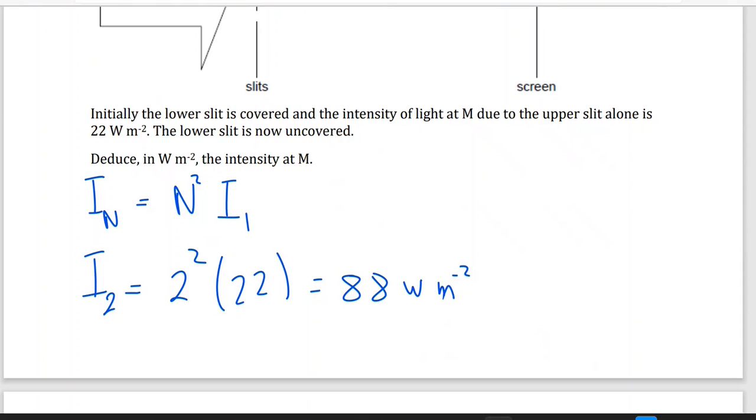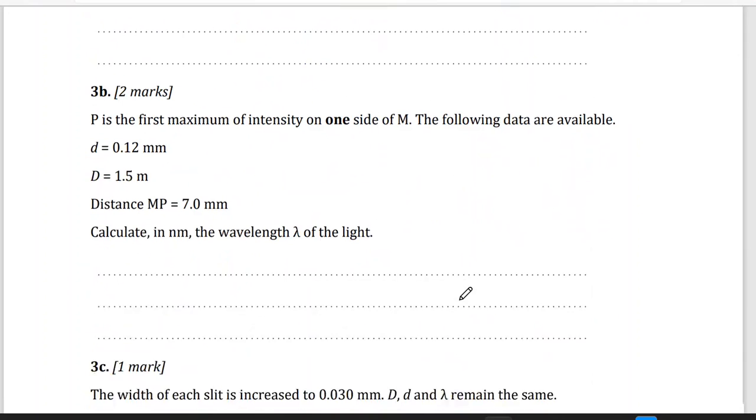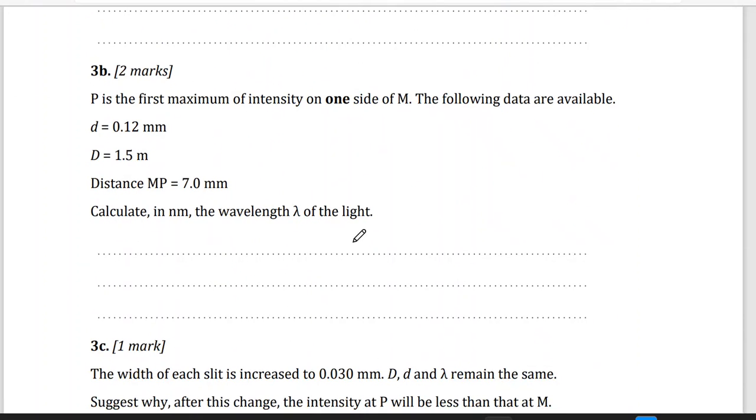Now, second part of the question. P is the first maximum intensity on one side of M. So M will be the central maximum, and P will be the first maximum. This is point P and this is M.